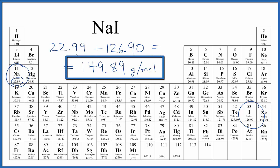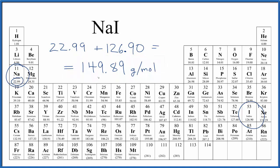My periodic table rounds to two decimal places, so if your periodic table rounds more or less, you might get a slightly different answer. What this means: if I have 149.89 grams of NaI, that'll be one mole. And if I'm given one mole, that'll have a mass of 149.89 grams.